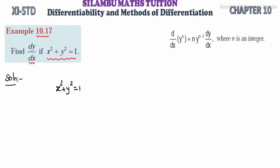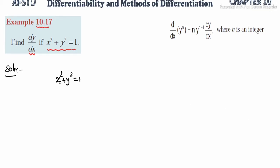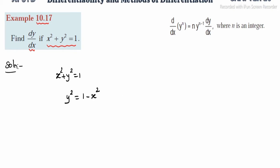Namaka require nana dy by dx. Adhanal y square yenge hold pannu lala. This x square right side le kondu pannu lala. Apo 1 minus idu x square ayero.